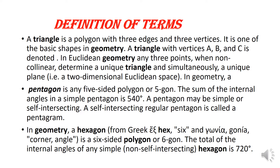In geometry, hexagon — from Greek hex, meaning six, and gonia, meaning corner or angle — is a six-sided polygon or six-gon. The total of the internal angles of any simple or non-self-intersecting hexagon is 720 degrees.